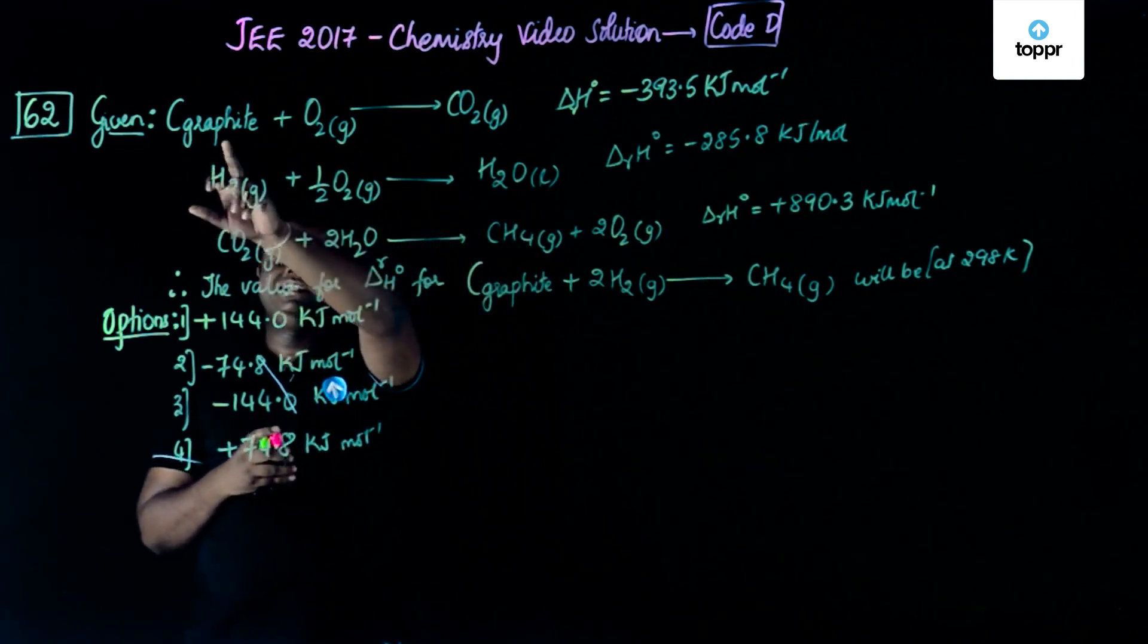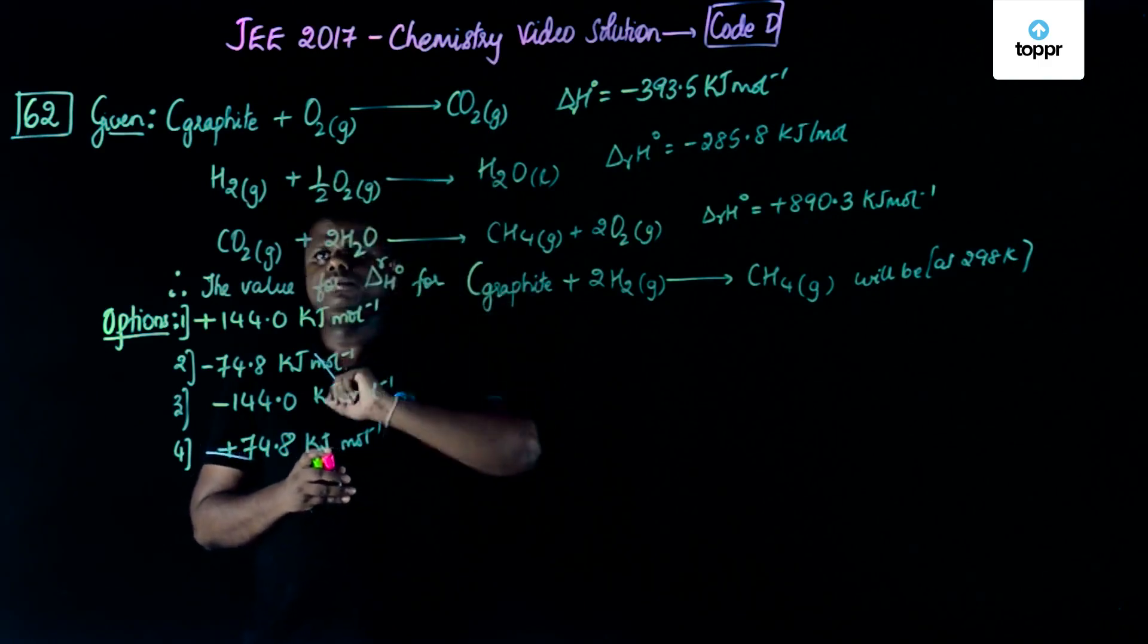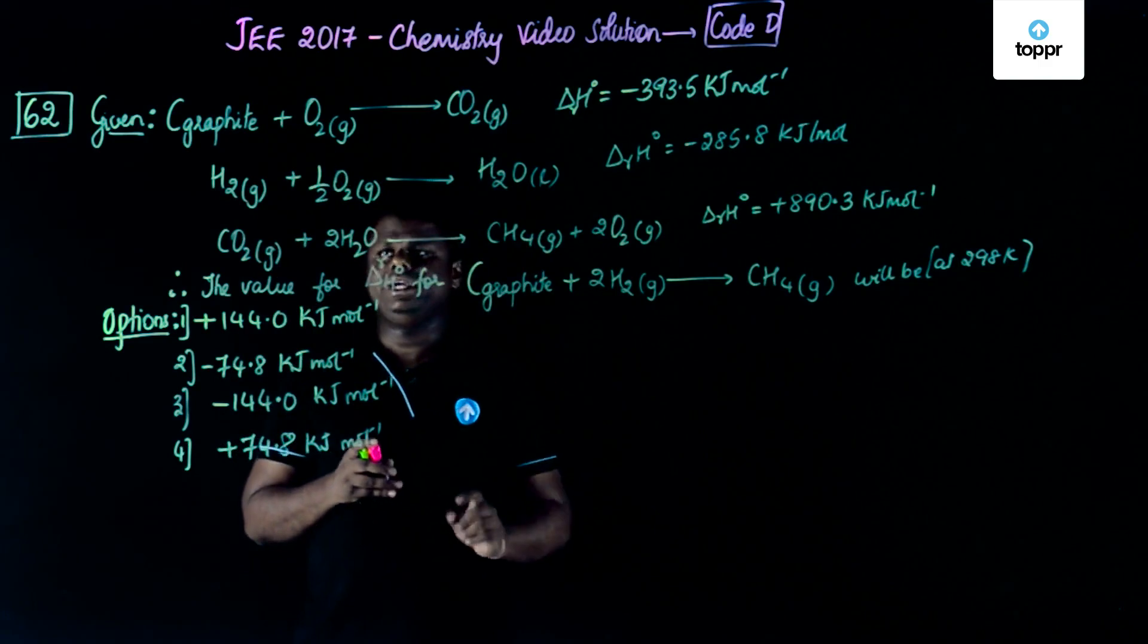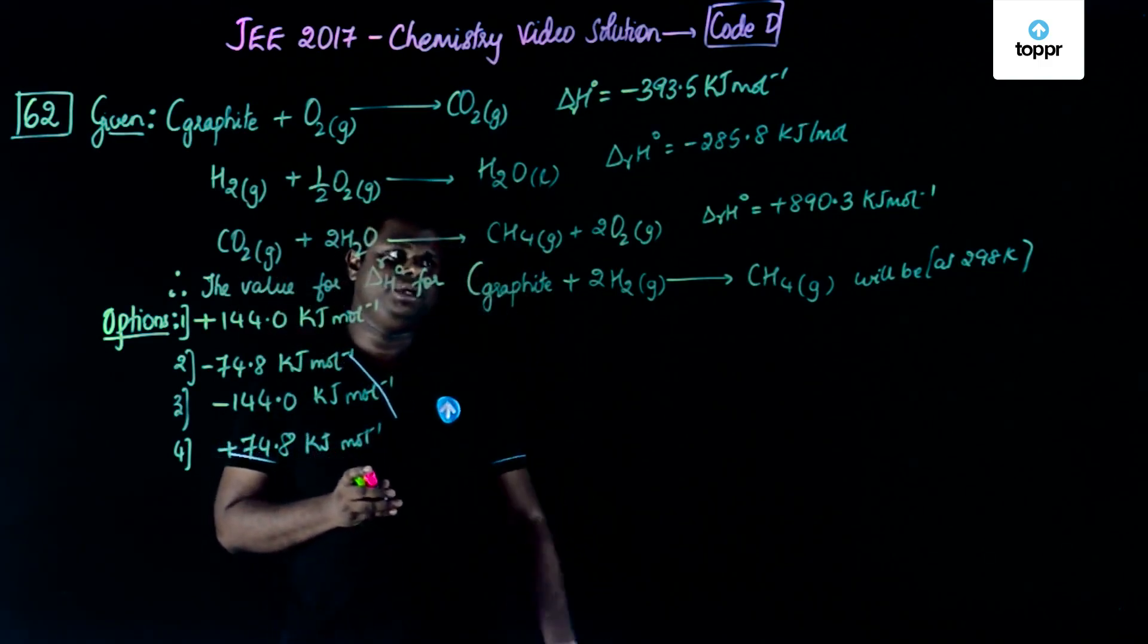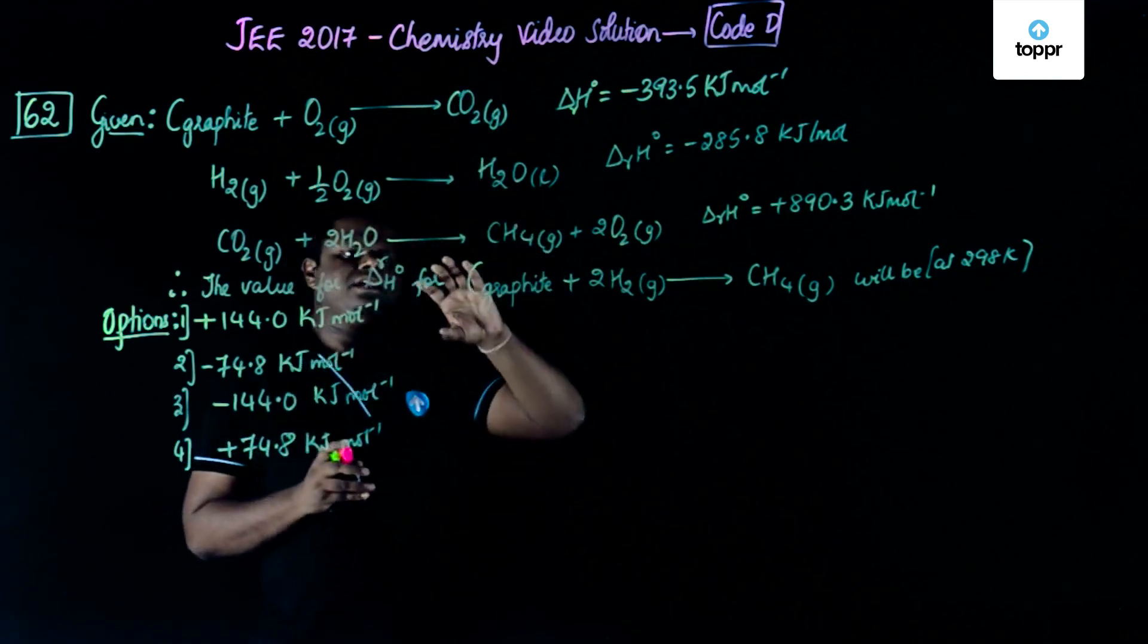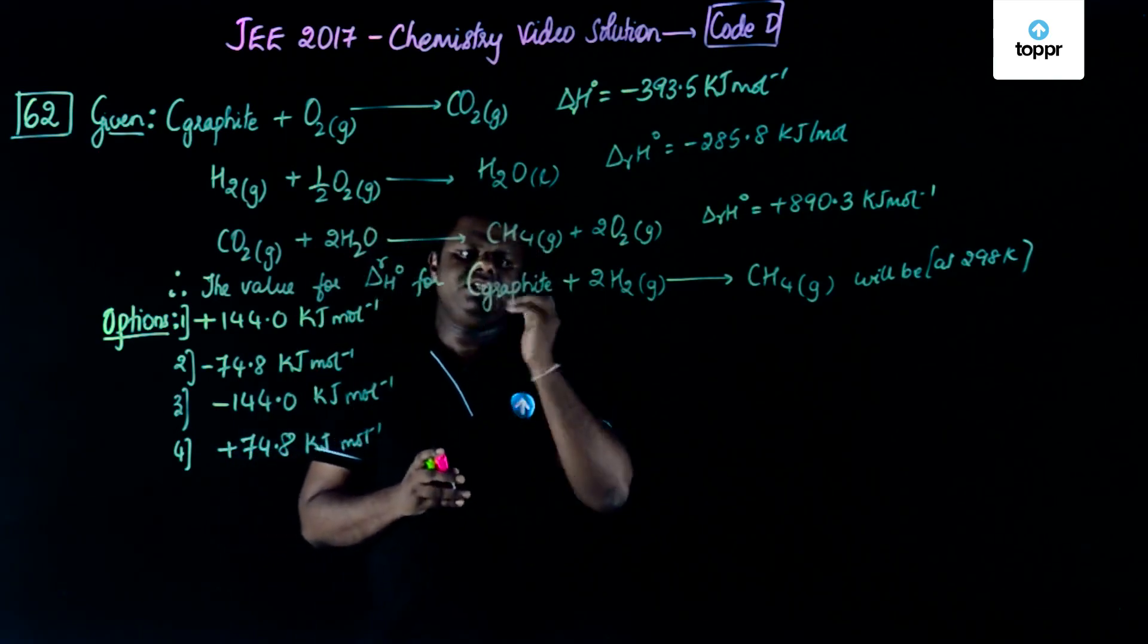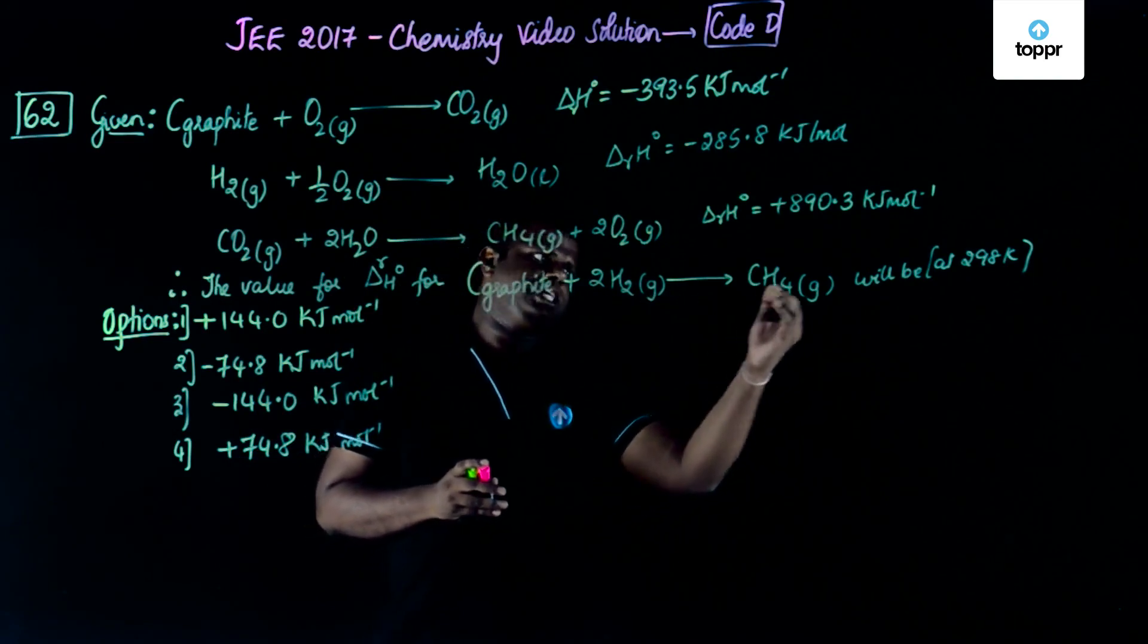The first is carbon in the graphite form, allotropic form, reacts with oxygen forming CO2. The second is H2 reacts with half O2 to give H2O in the liquid form. Then you have carbon dioxide reacting with water to produce methane releasing oxygen. Using these three equations, we are supposed to calculate the standard heat of formation for this reaction: carbon graphite plus 2H2 giving CH4.